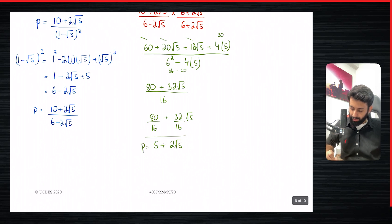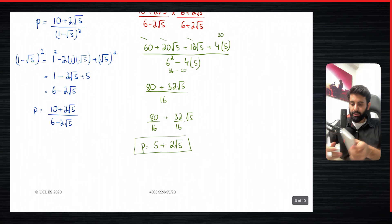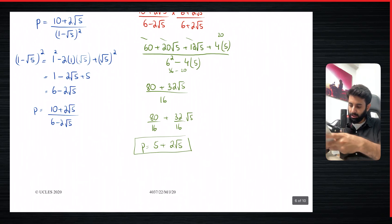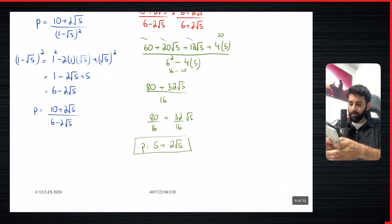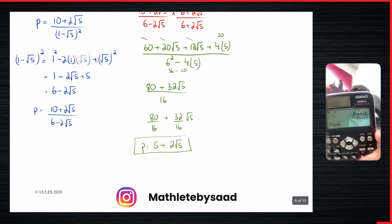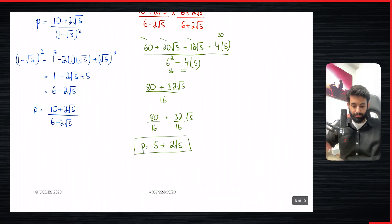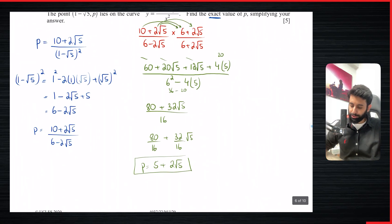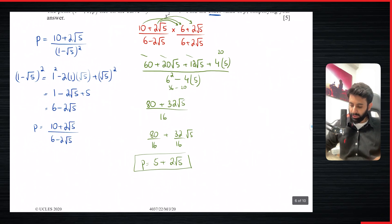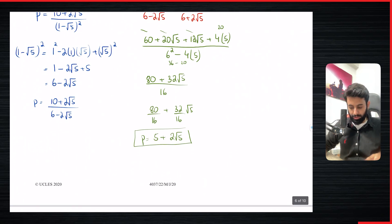I suggest using your calculator to check. Entering (10 plus 2 root 5) divided by (1 minus root 5) squared gives 5 plus 2 root 5 — which confirms our answer. So the value of p is 5 plus 2 root 5. That's 5 marks in the bag for sure. I hope you've understood this first question.